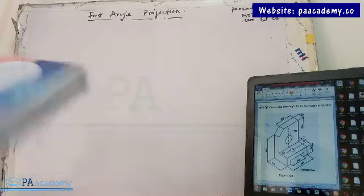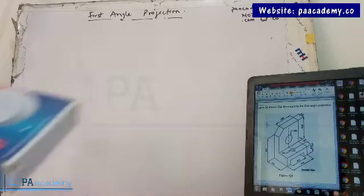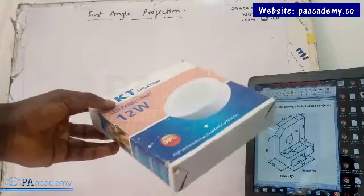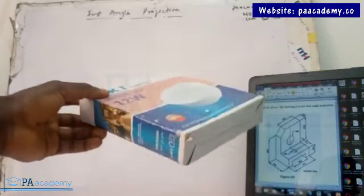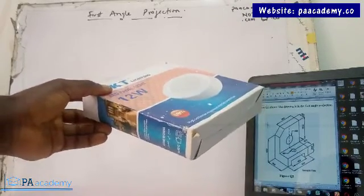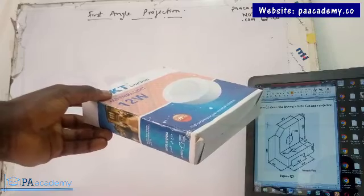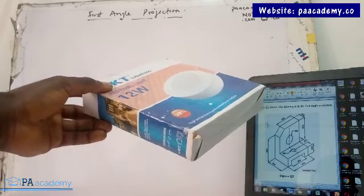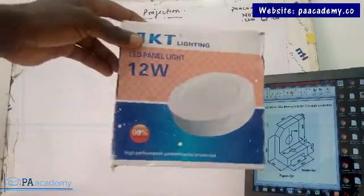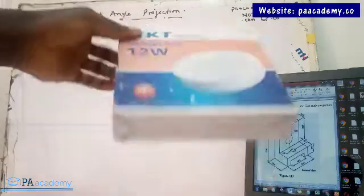So just like I explained in the first example under first angle projection, just look at this box that we are having. If I position it like this in isometric view, and you are asked to draw the first angle projection, you have to look at each of those faces like you are looking at them directly. So if you are looking at this directly, what do you see? That is what you are going to draw.